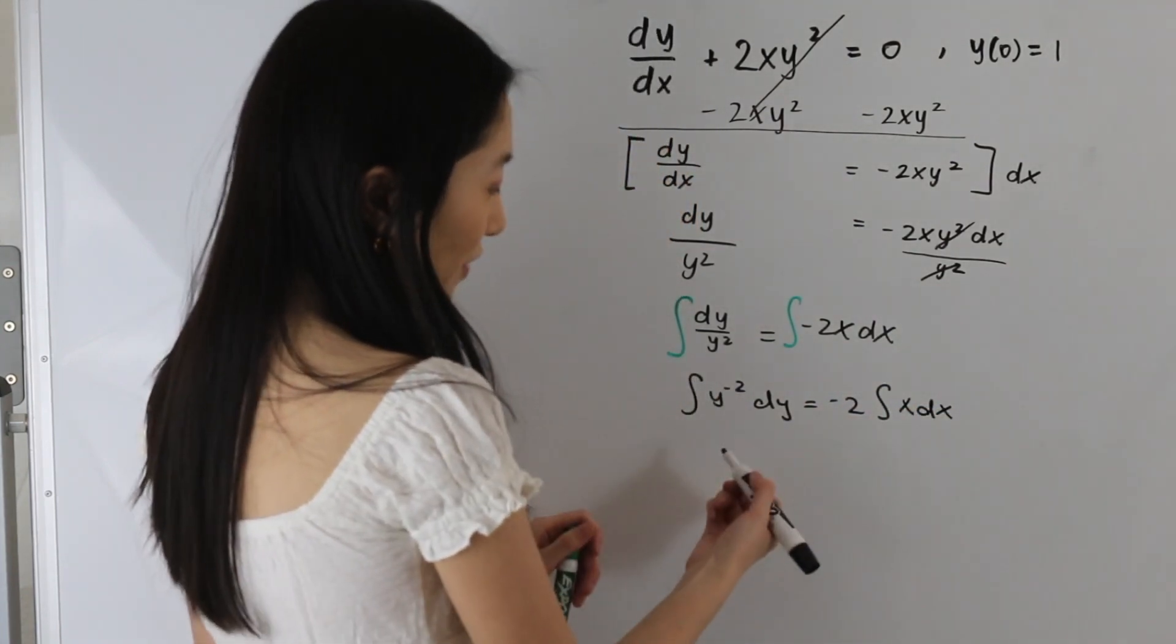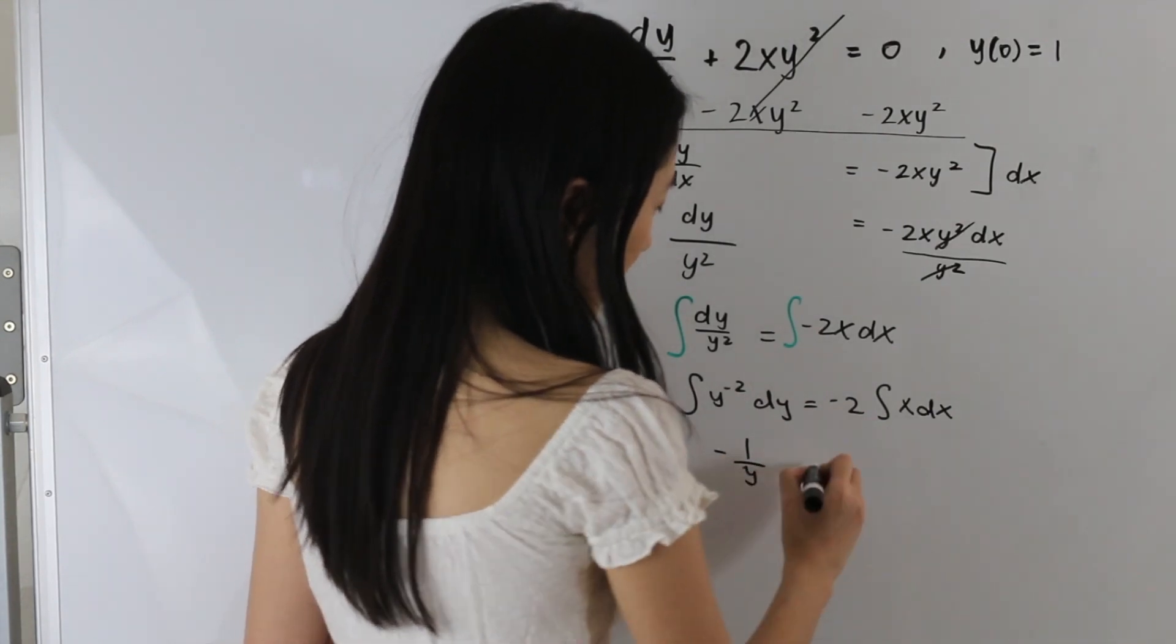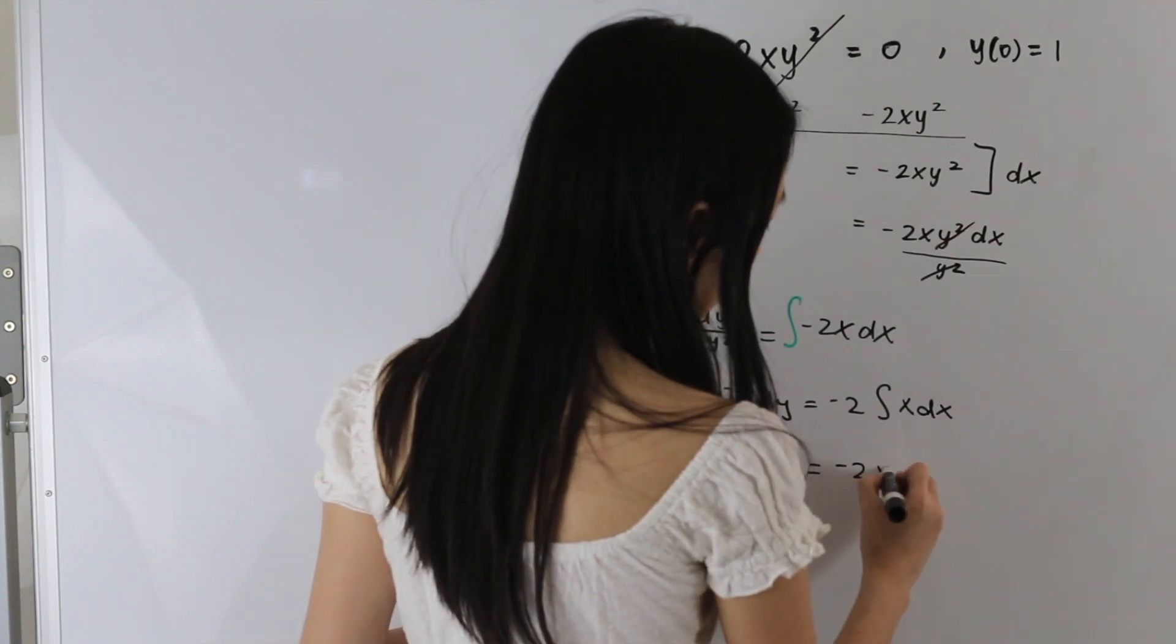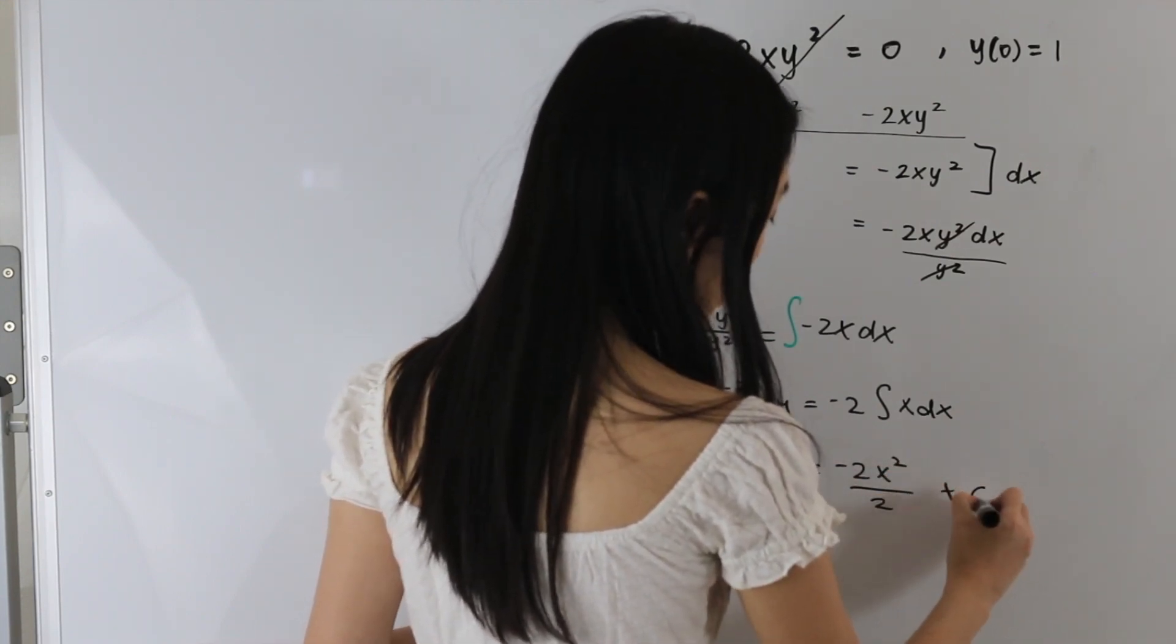So integrating the left-hand side, we get negative 1 over y. And integrating the right-hand side, we get negative 2x squared over 2 plus a constant.